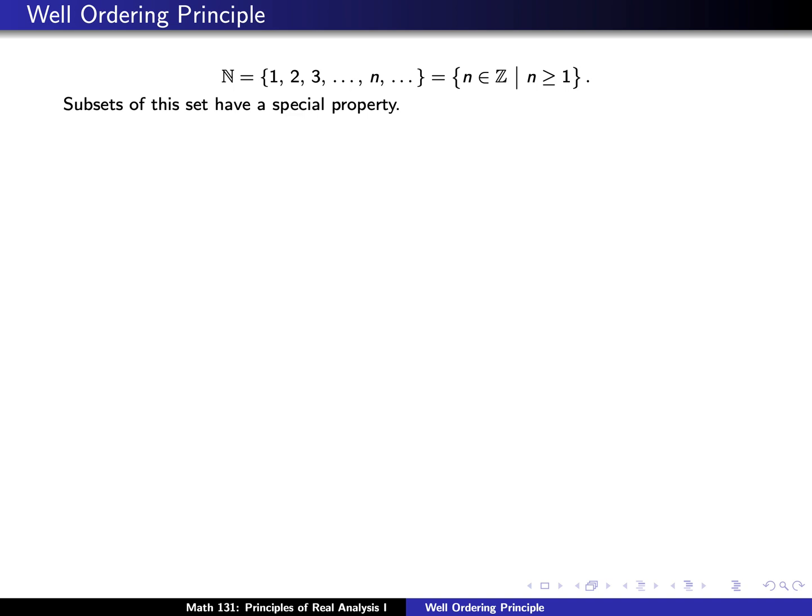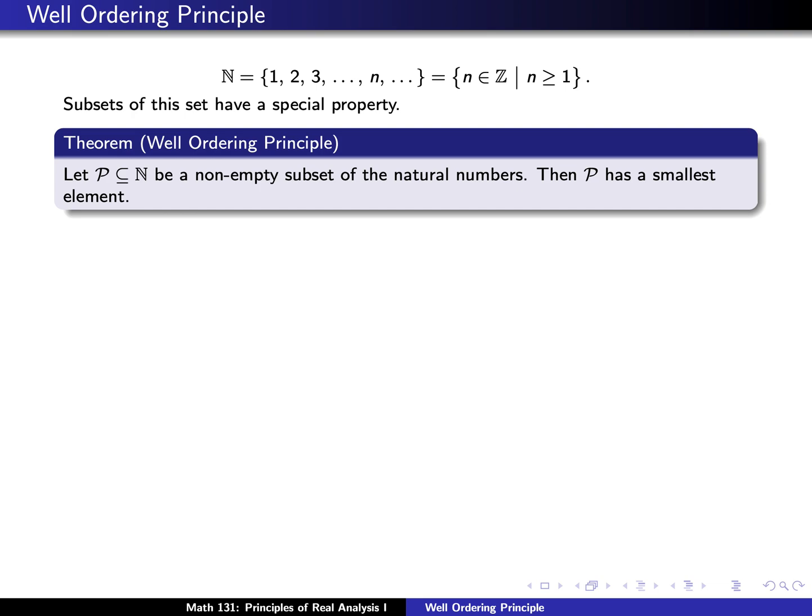But let's spend some time today focusing on the collection of natural numbers. Remember that we're defining natural numbers as just the positive integers, so we are not going to include 0. We can actually focus on subsets of the natural numbers, and they have a very special property. They satisfy what's called the well-ordering principle.